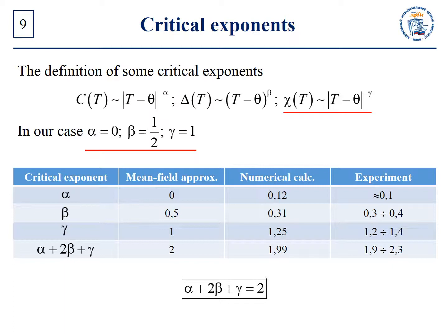Let us compare these results with dynamical calculations, the three-dimensional Ising model, and experimental data. Overall, there are about ten different critical exponents, but some of them depend on each other. It can be exactly shown that alpha plus two beta plus gamma is equal to two. In the mean-field approximation this expression is also correct, but unfortunately each exponent separately is incorrect. It is believed that critical exponents have a universal character — in other words, they do not depend on the physical nature of the substance.